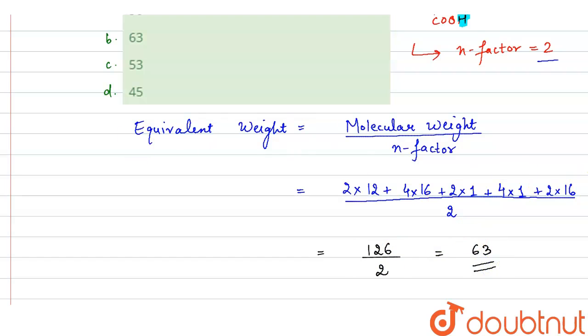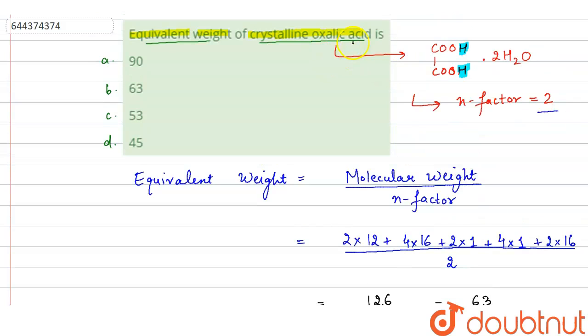So 63 is the equivalent weight of crystalline oxalic acid. So here option B, 63 is the correct option. So option B is the answer. Thank you.